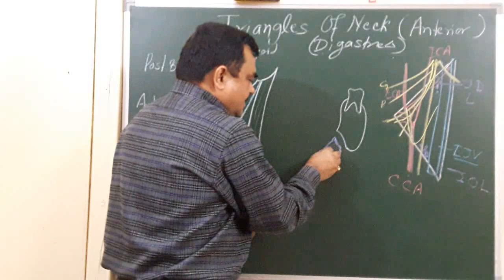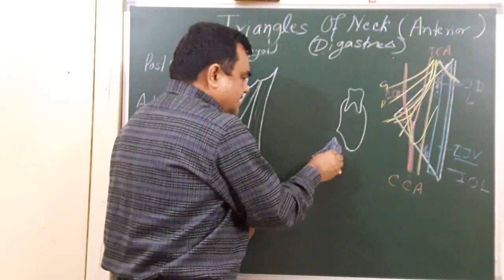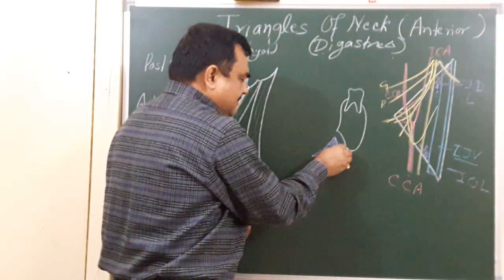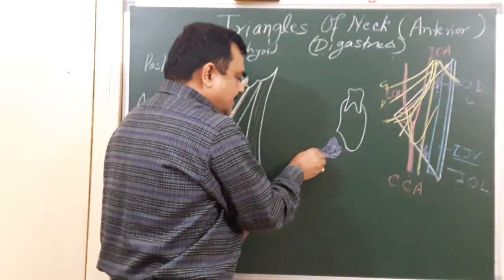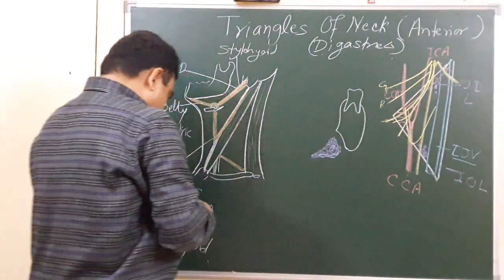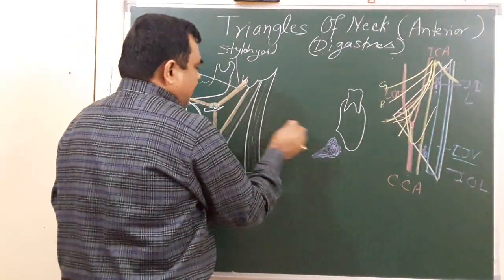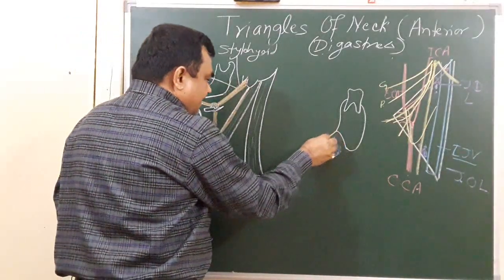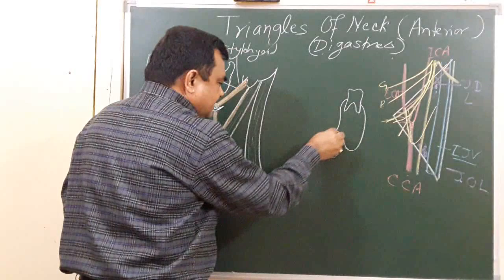This is the superficial part of the submandibular salivary gland. And in this diagram we can identify the floor. The floor is formed by the muscle seen here.